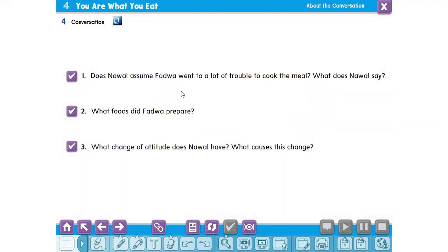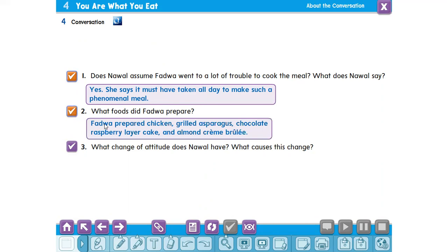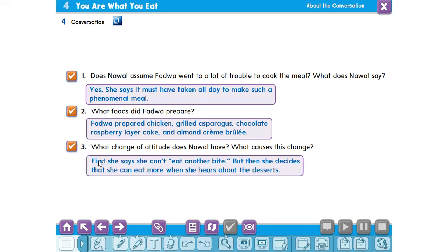Does Nawal assume Fadwa went to a lot of trouble to cook the meal? What does Nawal say? Yes, she says it must have taken all day to make such a phenomenal meal. What food did Fadwa prepare? Fadwa prepared chicken, grilled asparagus, chocolate raspberry layer cake, and almond cream brulee. What change of attitude does Nawal have? What causes this change? First, she says she can't eat another bite. But then she decides that she can eat more when she hears about the desserts.